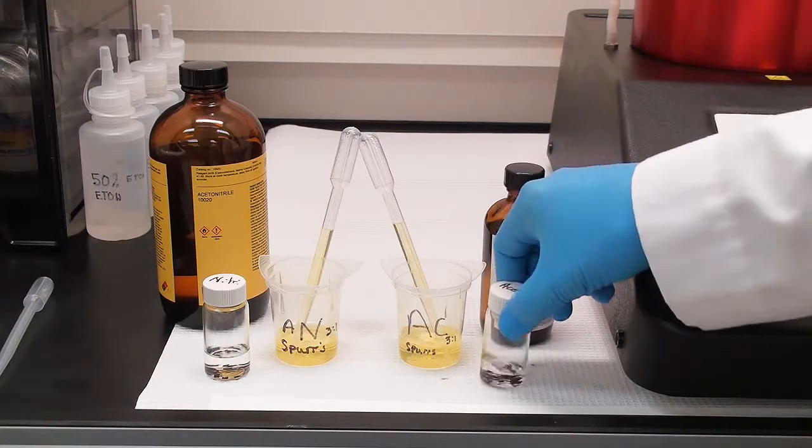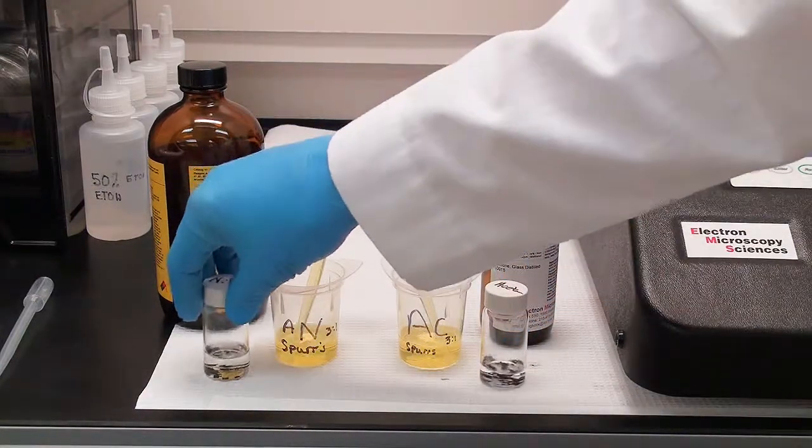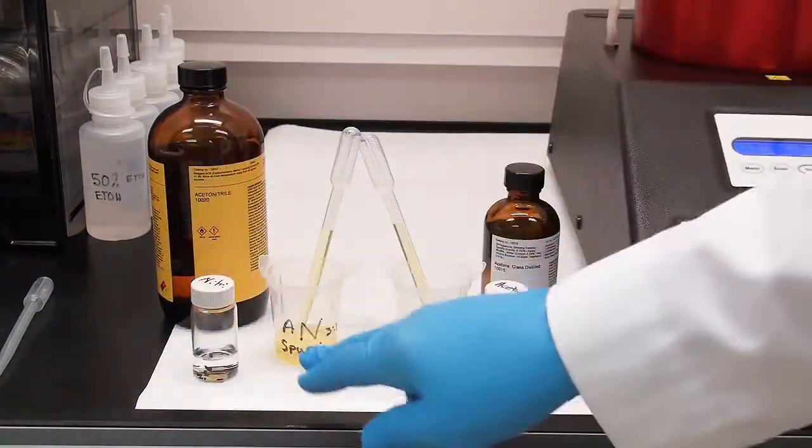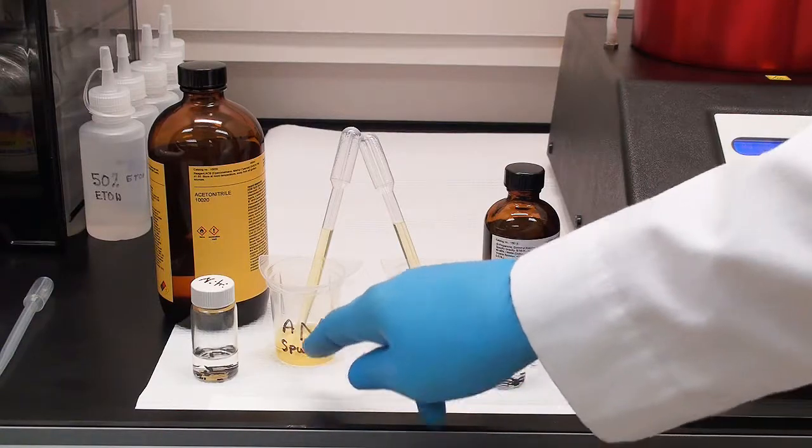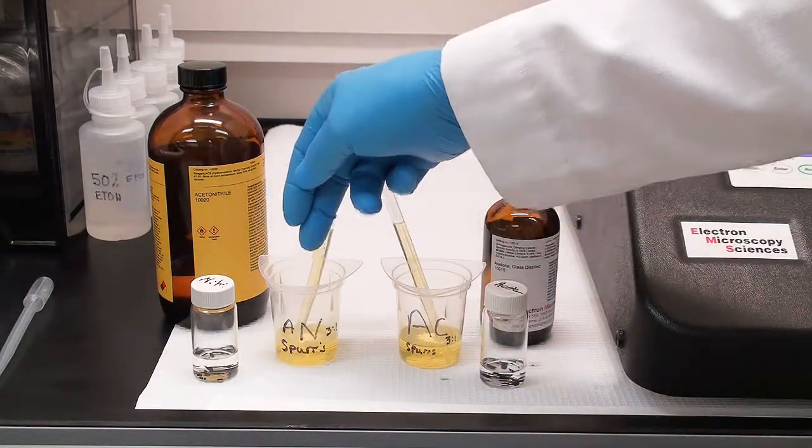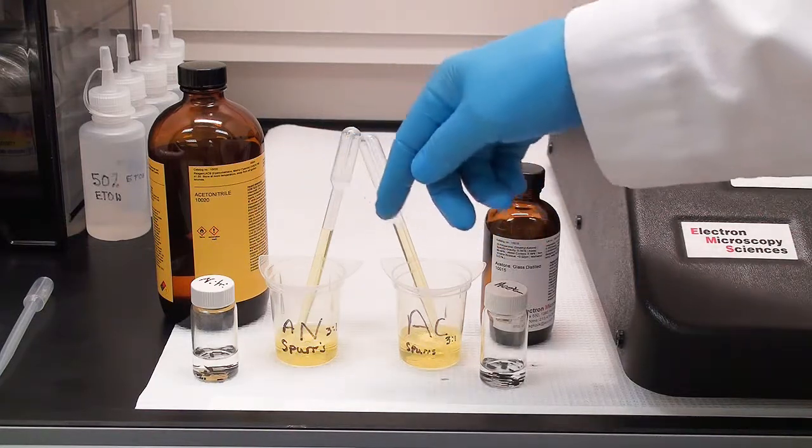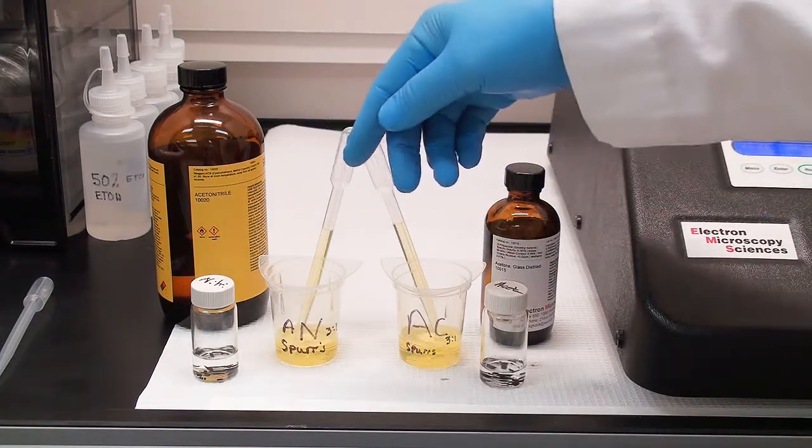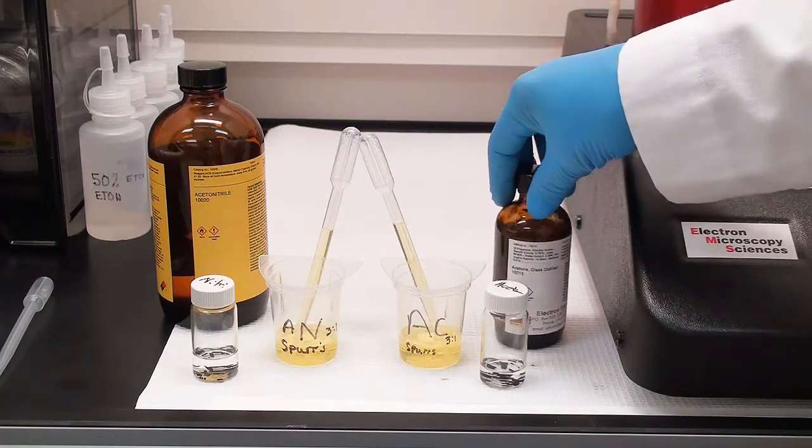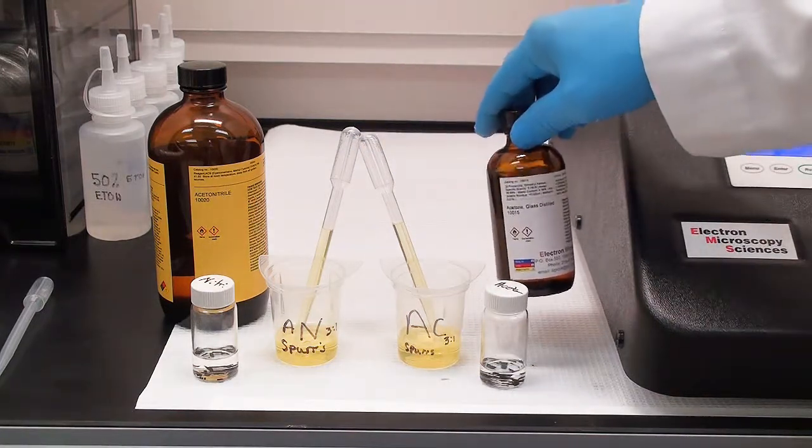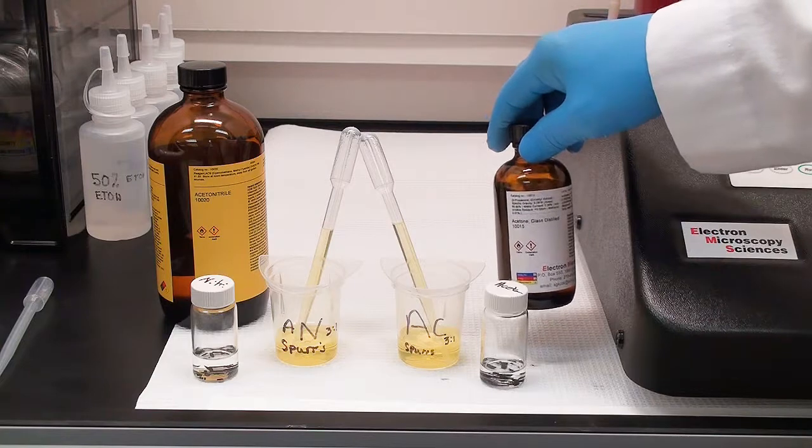I've processed two different samples of plant and some kidney. The kidney is really for my morphologic control. And I have Spurs resin with both a 3 to 1 ratio of acetone to spurs and acetonitrile to spurs. I always use the glass distilled acetone to avoid any type of moisture contamination.